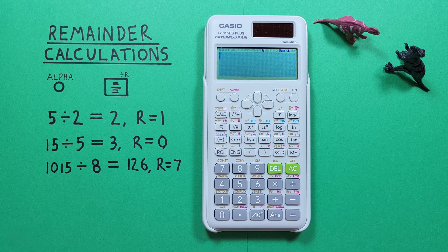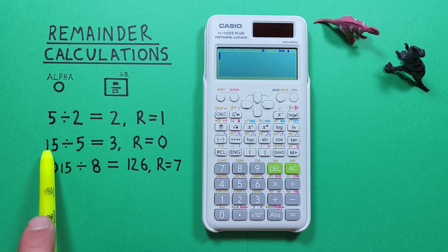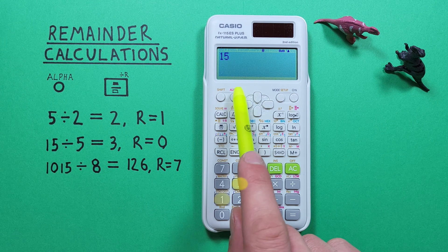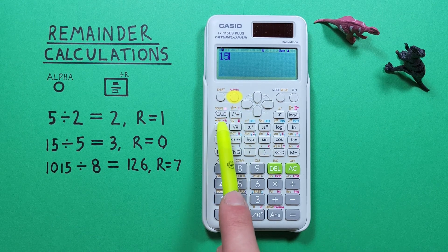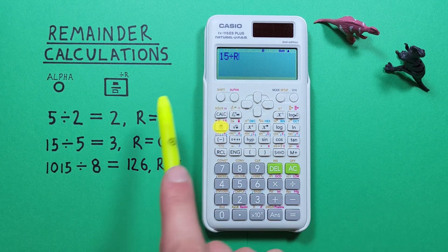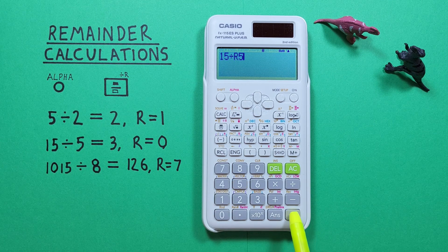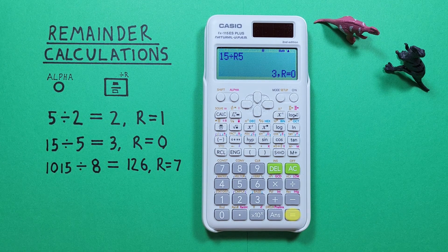Another example, let's see how many times 5 goes into 15. So we place the 15 on our screen, press the alpha fraction key for the remainder and then 5, press equals and we get a 3.